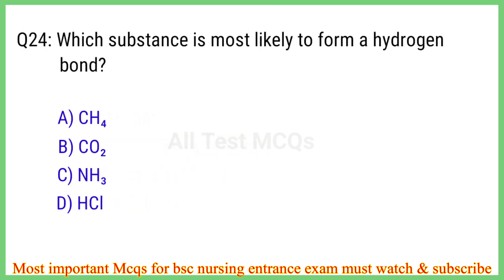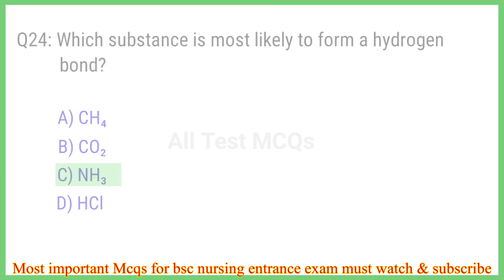Q24. Which substance is most likely to form a hydrogen bond? The correct answer is option C: Neutralization.